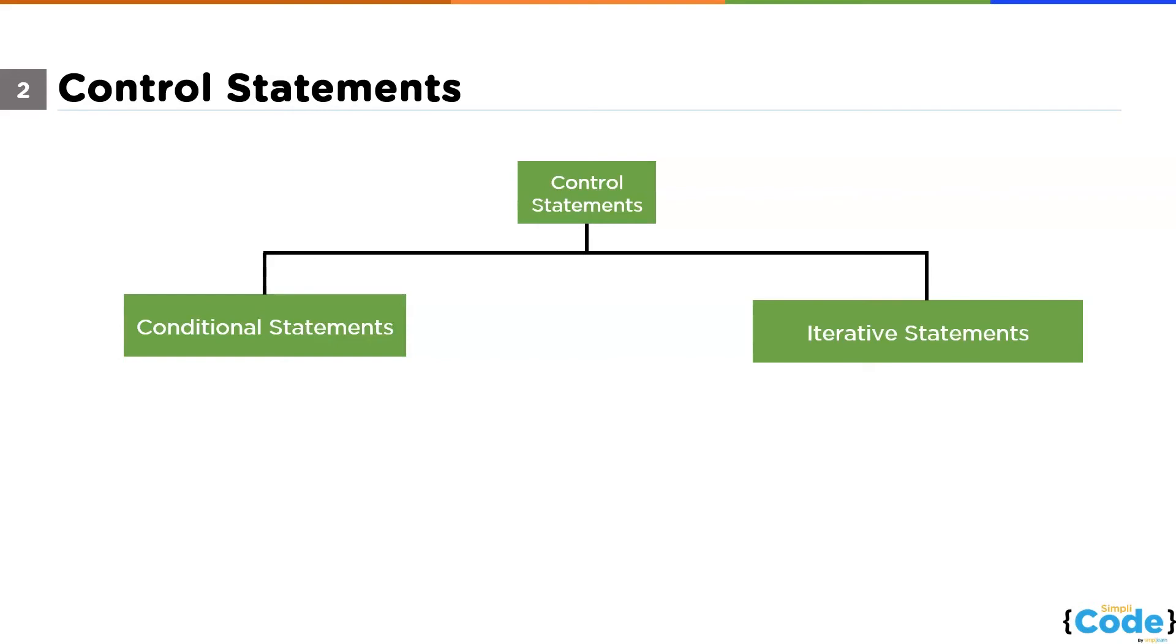Talking about conditional statements, as the name suggests, we use conditional statements when we have to make decisions based on conditions. When we have two choices or two different conditions and we want to make choices accordingly. So that's where we use conditional statements. We have two different types of conditional statements: the if-else statements and the switch case.